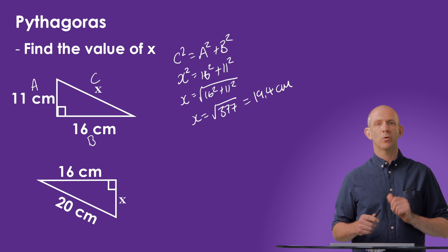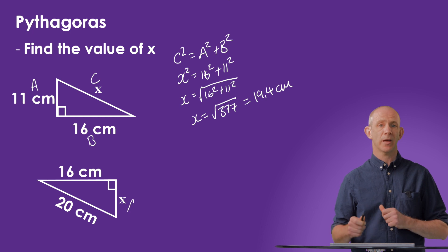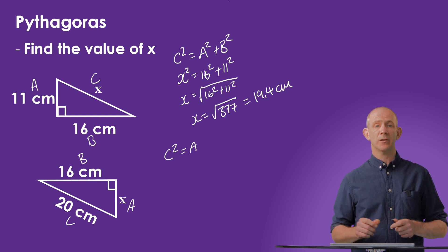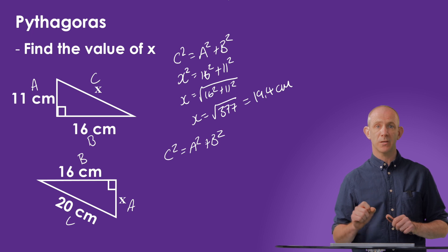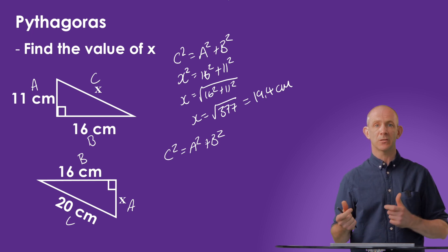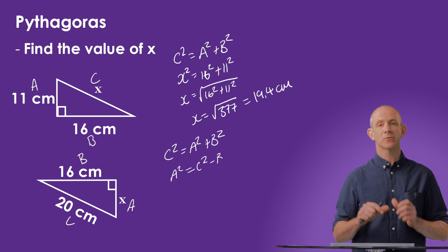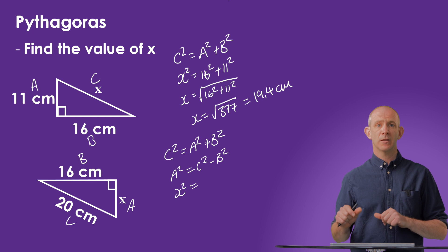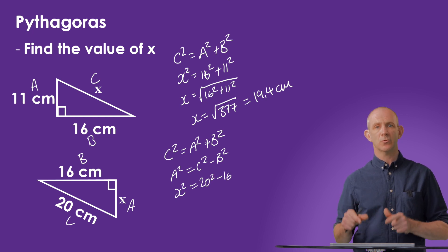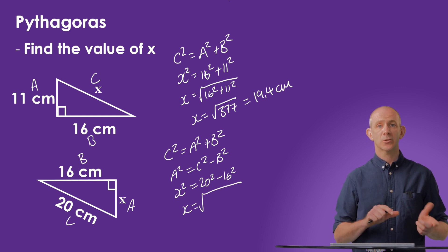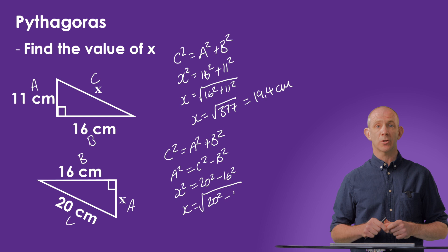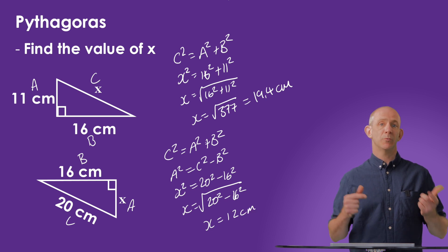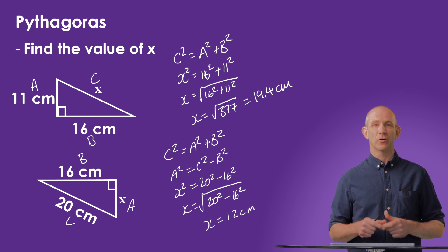In the second example, the X variable is on one of the shorter sides. So as before, let's label the sides A, B and C, remembering to keep C as the hypotenuse. Again, we can state our formula is C squared equals A squared plus B squared, which we rearrange by subtracting B squared from both sides to get A squared equals C squared minus B squared. We can now substitute in our values to get X squared equals 20 squared minus 16 squared. Square rooting both sides gives X equals the square root of 20 squared minus 16 squared, which gives us X equals 12 centimetres. So it was also a multiple of a Pythagorean triple as it gave us an integer.